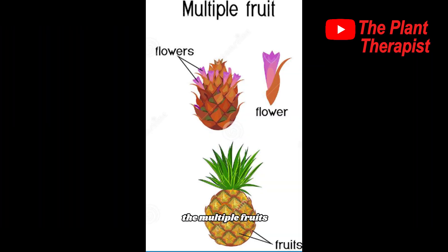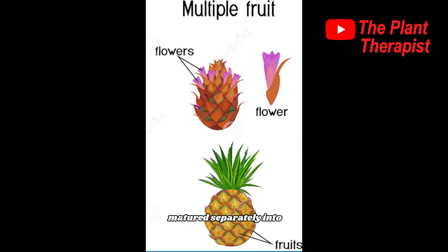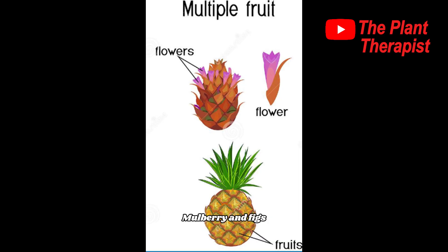The last category of fruits are multiple fruits. Multiple fruits are derived from several to many individual flowers in a single inflorescence — the word used for a cluster of flowers. Each flower in the inflorescence has its own receptacle, but as the flowers mature separately into fruitlets they develop together into a single larger fruit. Examples of multiple fruits include pineapples, mulberry, and figs. In multiple fruits, the individual flowers are fused together on a fleshy axis and the fruitlets coalesce into a single fruit.